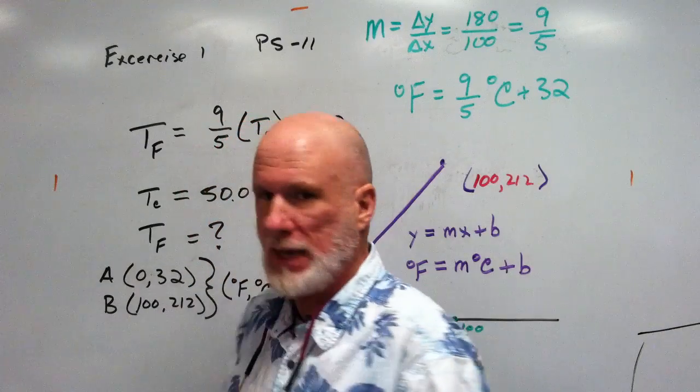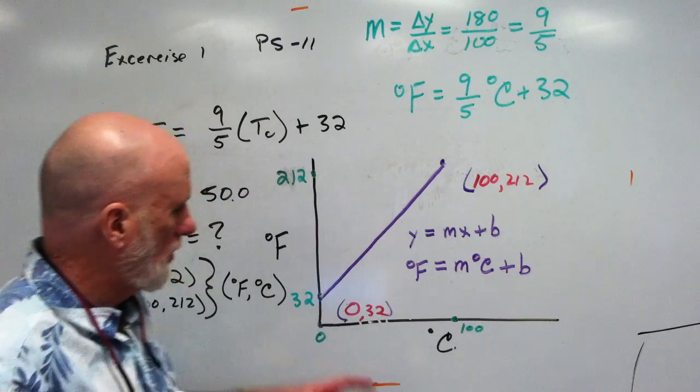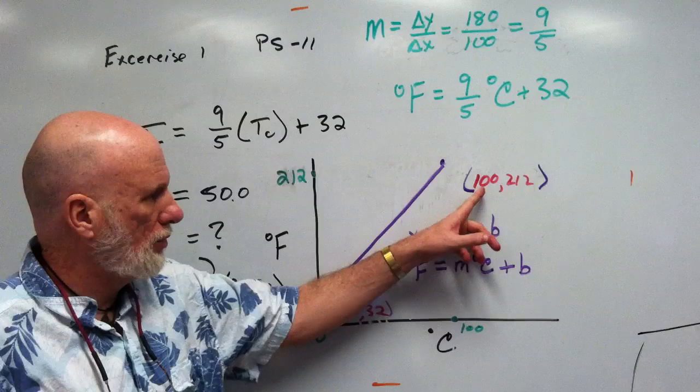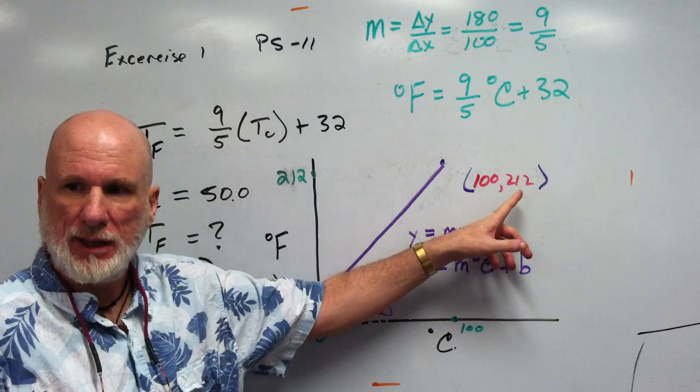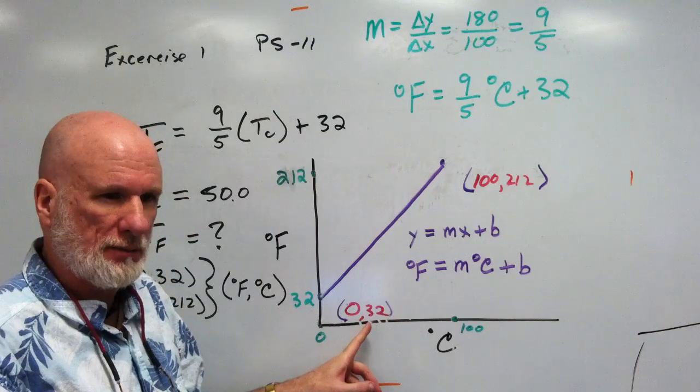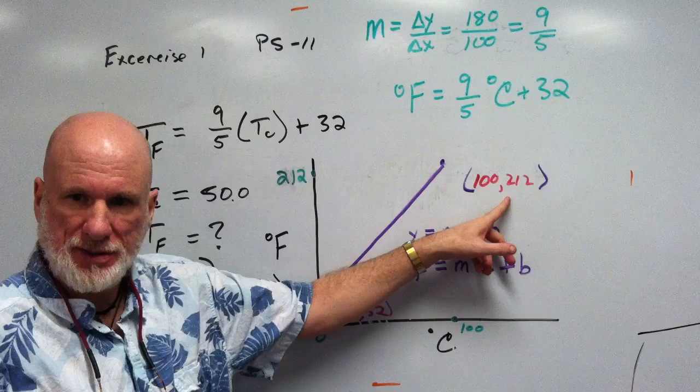All right? So zero, 32, and 100, and 212. Freezing, boiling. Correct? Does that make sense?